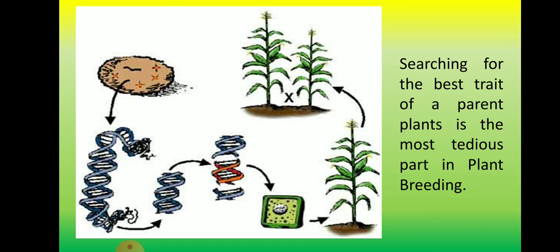In plant breeding, searching for the best trait of a parent plant is the most tedious part. For example, we want tall corn. Tall traits are more dominant than short ones. The character traits of being tall are obtained from a donor parent. Taller corn plants are expected to have more nodes and more ears to be produced, and the certain genes are carried through the first filial generation.